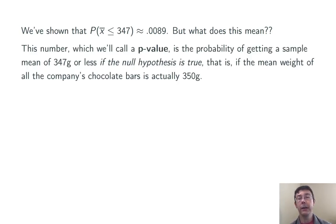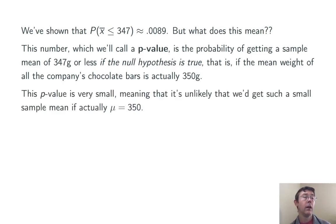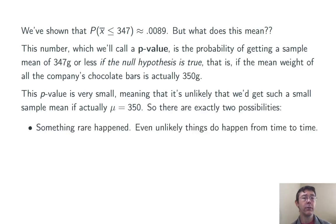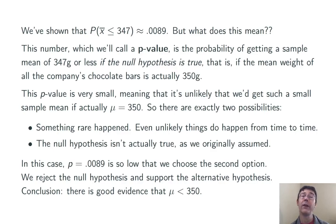Let's talk for a minute about what exactly this means. This probability, which we'll call the p-value, is the probability of getting a sample mean of 347 grams or less if the null hypothesis is true. That is, if the mean weight of all the company's chocolate bars was actually 350 grams. It's a very small p-value, meaning that it's unlikely that we would get such a small sample mean if, in fact, that null hypothesis were true. So, basically, there's two things that could have happened here. First of all, the company was right and mu is 350 grams, in which case something rare has happened. And that's possible. Even very rare things do happen from time to time. In this case, it would be 0.0089 of the time. The other possibility is that that null hypothesis was actually false, as we had initially assumed. And in that case, that the alternative hypothesis would be true.